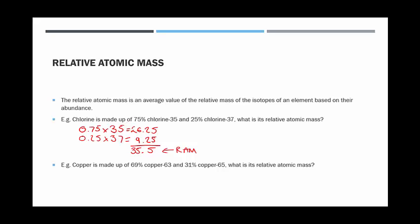So in the second example, we've got copper which is made up of 69% copper-63 and 31% copper-65.